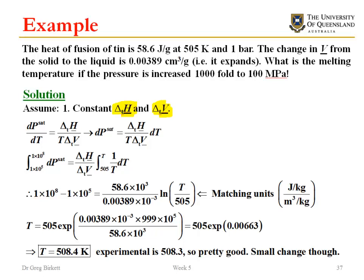Substituting all this in and remembering to keep my units as being matching, so to convert these both into joules per kilogram and meters cubed per kilogram, then if I do the calculation, take the exponential of both sides, make T my subject, then what I get is my final temperature here is 508 Kelvin or 508.4 Kelvin.